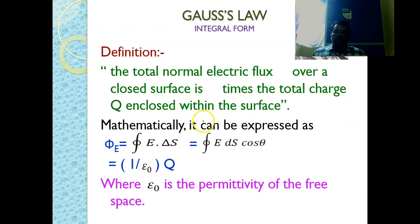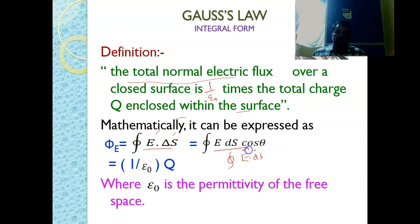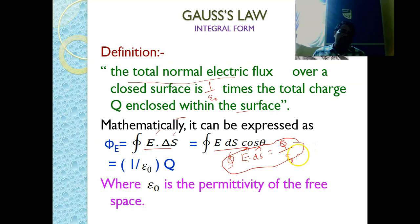This is Gauss law. Gauss law states that the total normal electric flux over a closed surface is (1/ε₀) times the total charge q enclosed within the surface. Mathematically: Φ_E = ∮ E⃗ · dS⃗ = ∮ E dS cos θ = q/ε₀, where ε₀ is the permittivity of free space. If applying Gauss law in a medium, ε₀ is replaced with ε.